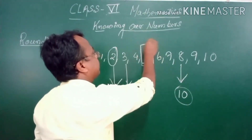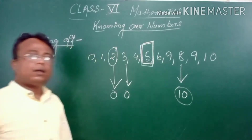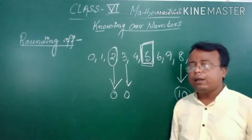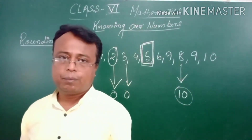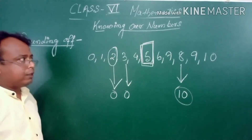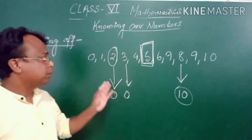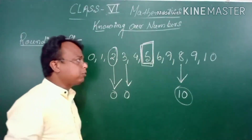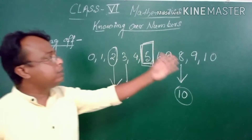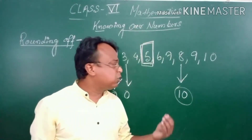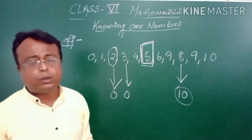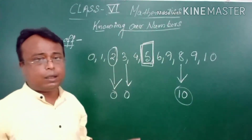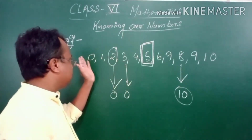Now, what about 5? Can you tell me whether 5 is nearer to 10 or nearer to 0? Obviously, this 5 is located equidistant from 0 and equidistant from 10. We can't tell, because it lies equidistant from these two numbers — 0 and 10.